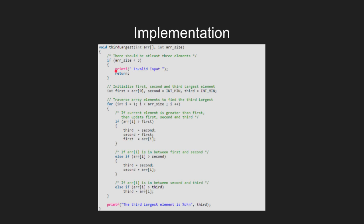Let's look at the implementation of this problem in C++. First we create three variables: first, second, and third. Then we traverse through the array. If the ith element is greater than 'first', then we update all the variables. Else if the ith element is greater than 'second', then we update 'third' and 'second'. Otherwise we update 'third'.